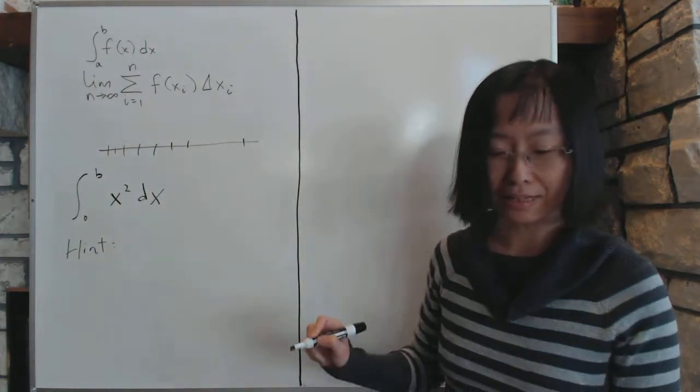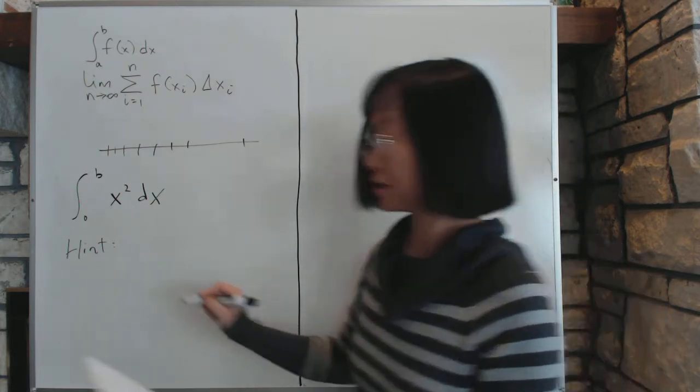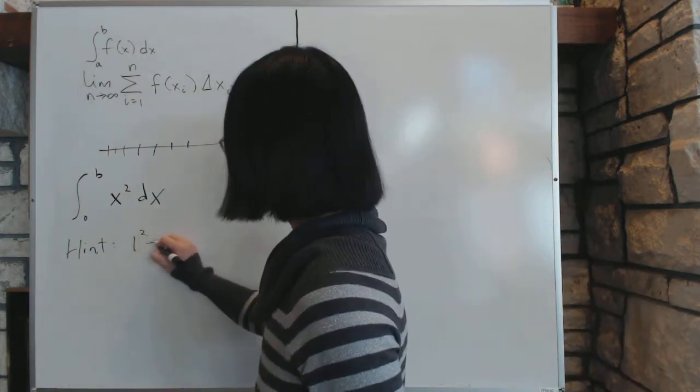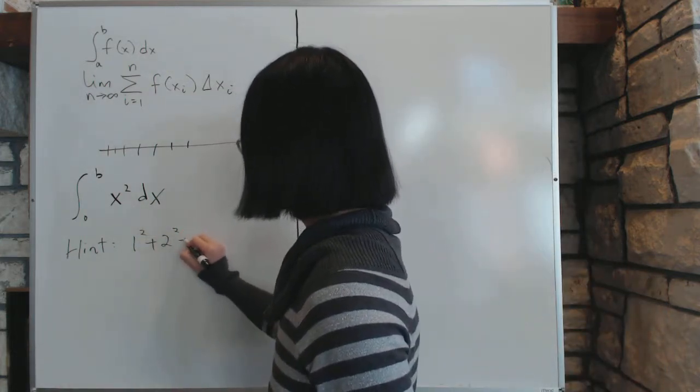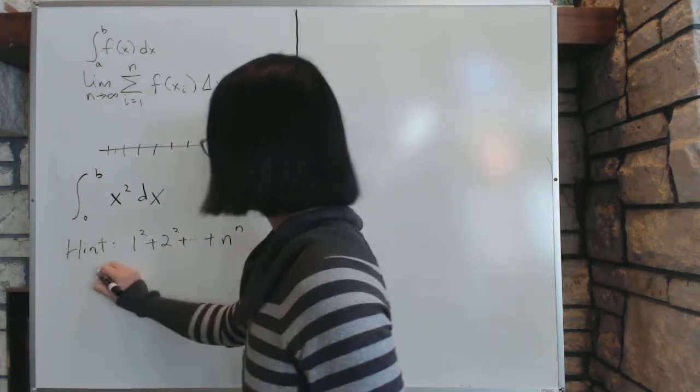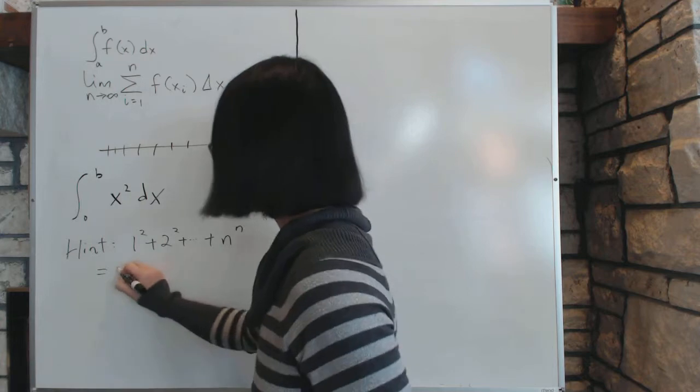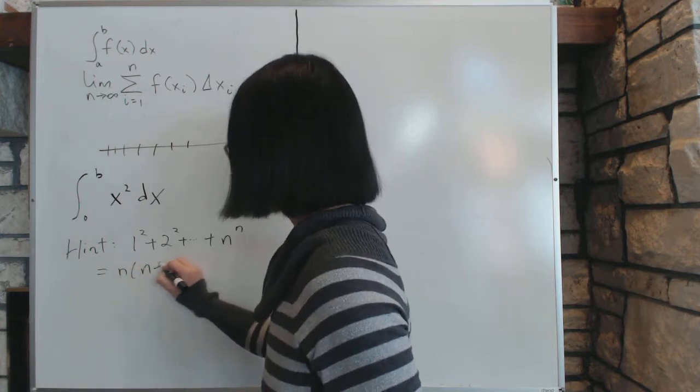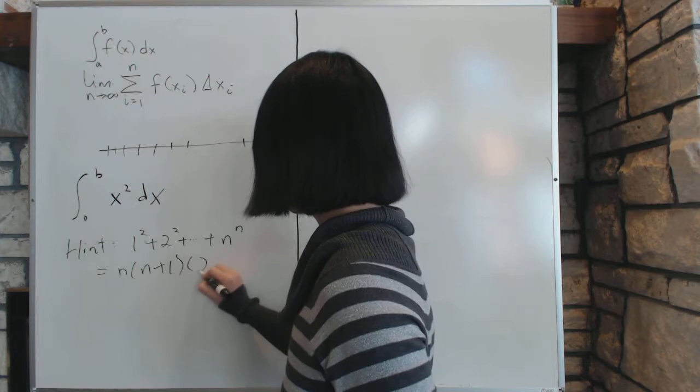which says that 1 squared plus 2 squared all the way up to n squared equals this particular equation. Now, we're not going to prove this particular hint right now.